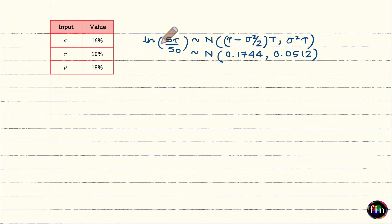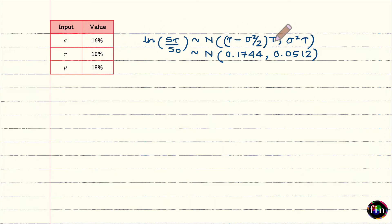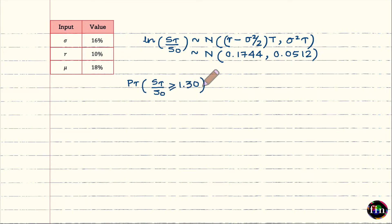With these values confirmed, let us write the target probability as: probability that S-t over S-naught is greater than or equal to 1.3. Since our distribution assumption is for the log of S-t, let us take the log of both sides of this inequality.